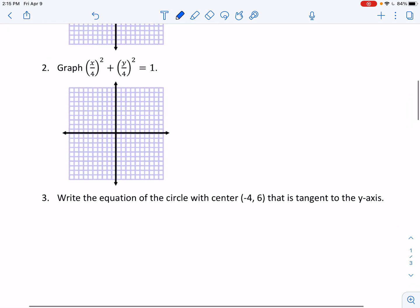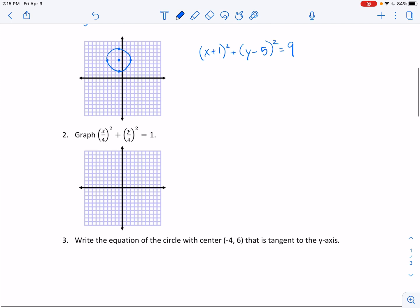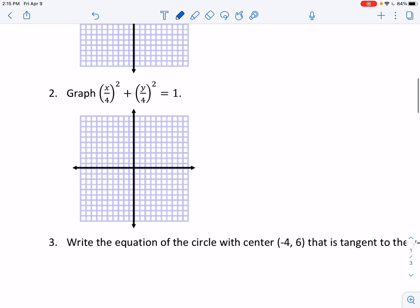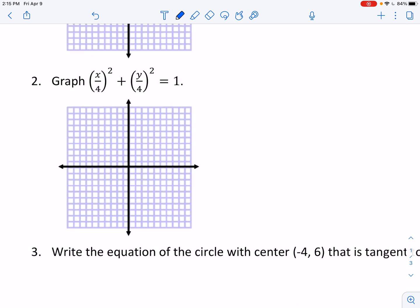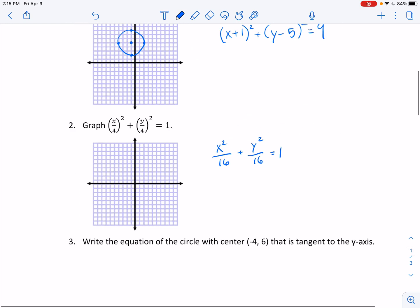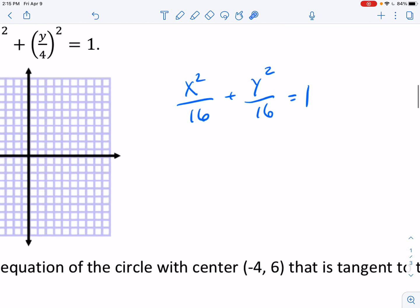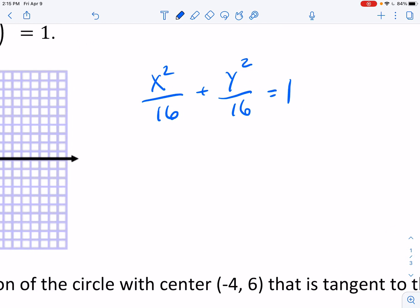Next one. They're saying graph x over 4 squared plus y over 4 squared equals 1. Let's clean this up a little bit. When I square, I can square both the numerator and the denominator. This isn't the form that we are used to seeing things in. We want no denominators. So if I just multiplied everybody by 16 then that cleans everything up quite nicely. I get x squared plus y squared equals 16.